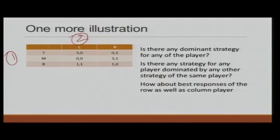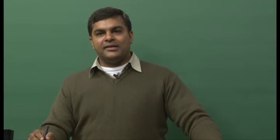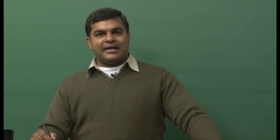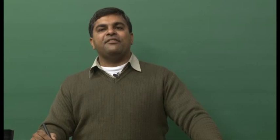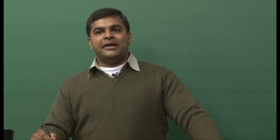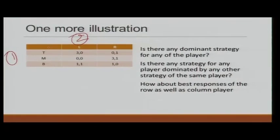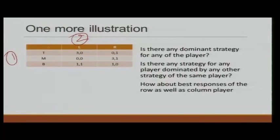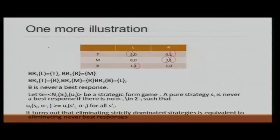None of the players have any dominant strategy in this game. However, is any strategy dominated by another strategy of the same player? If we allow for mixed strategies, then B is strictly dominated by playing half T and half M.